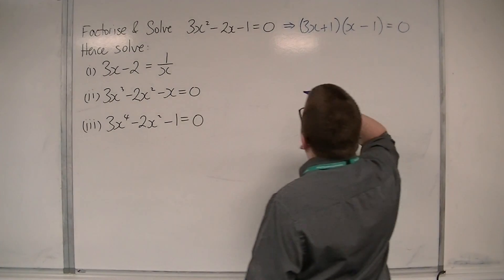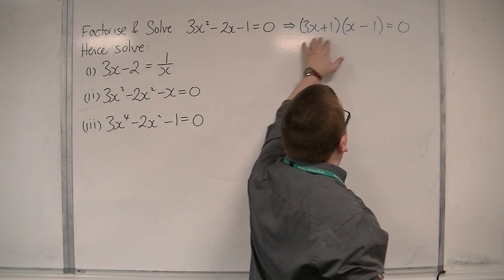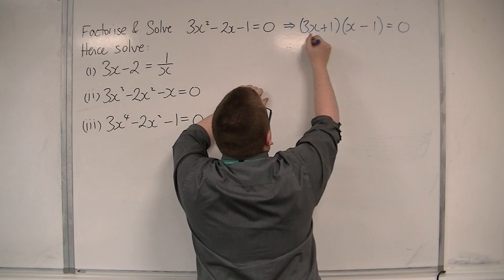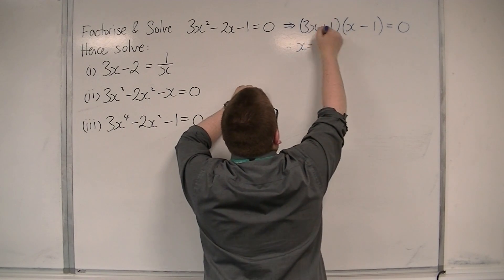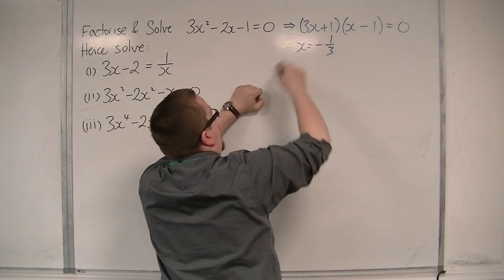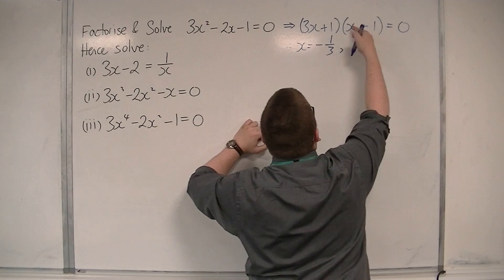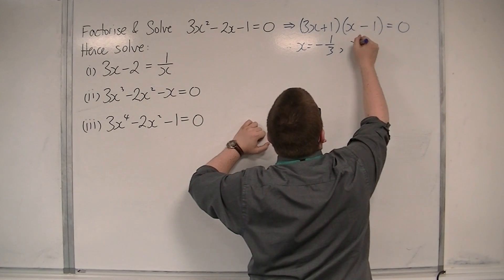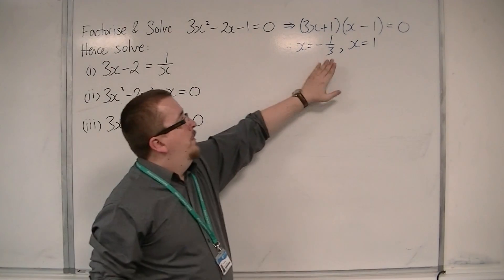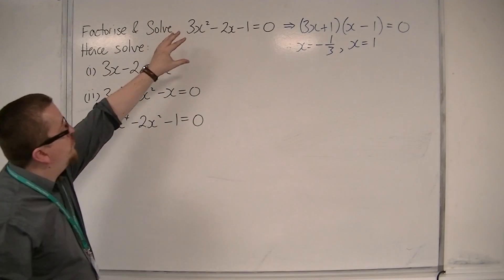From that, we factorised it, and then, in order for this to be equal to 0, either this bracket is 0 or that bracket is 0. So, in which case, x is either equal to minus 1 third—so put 3x plus 1 equals to 0 and solve that equation—or x minus 1 is 0, in which case x is equal to 1. So, these two solutions here solve this quadratic equation.